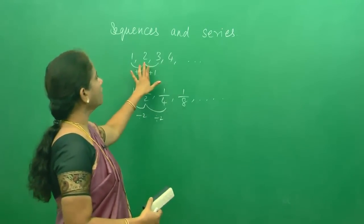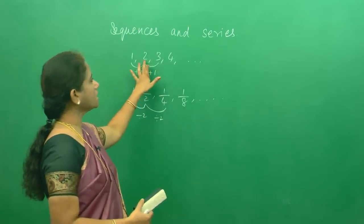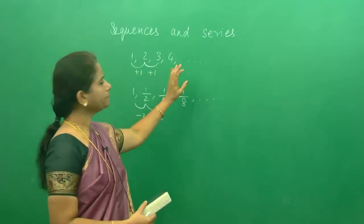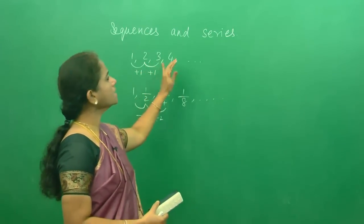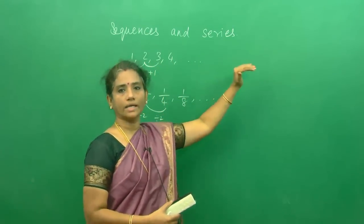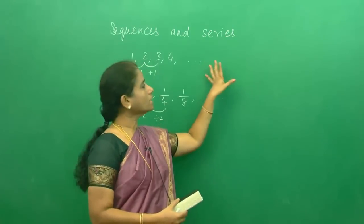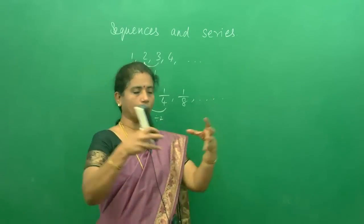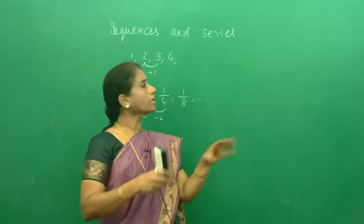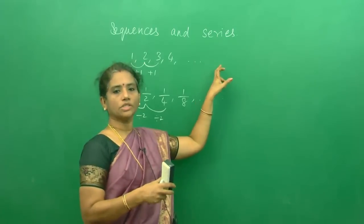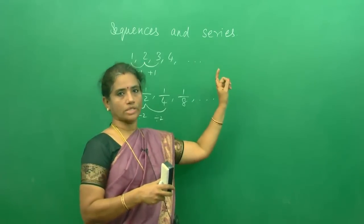When you look at the sequence 1, 2, 3, 4, all the terms go on increasing. So this cannot converge. Converge means come to a point. So this will be a divergent sequence.